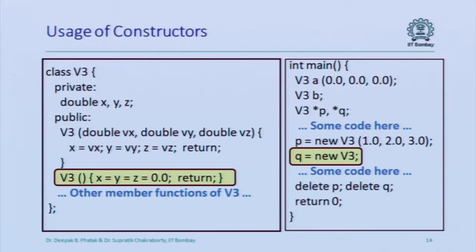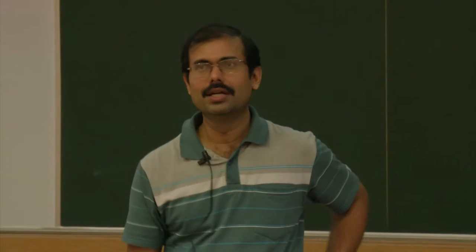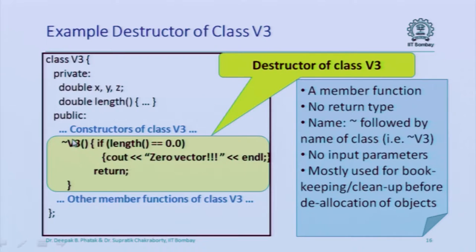Therefore, you can do all kinds of initialization after the object is created. Just like constructor functions, there are things called destructor functions. Whenever an object of a particular class is being deallocated and memory is being freed up, the destructor function will be called immediately before freeing it. So the constructor is called immediately after the object is allocated, and a destructor is called immediately before the object is freed. It is a convenient way to do bookkeeping, cleaning up, and similar tasks. C++ mandates that a destructor function's name must be the same as the name of the class with a tilde before it.